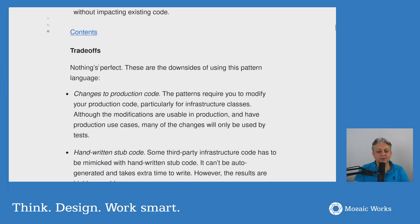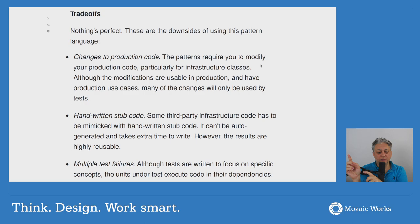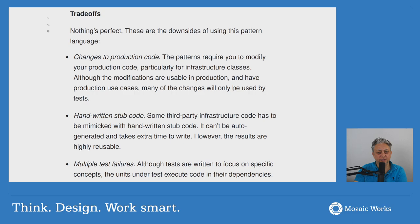Now the trade-offs — nothing's perfect. First, changes to production code: you'll need to add changes, particularly for infrastructure classes. That said, since you test behaviors that combine multiple classes, you don't need to make every class nullable — only the classes that touch external resources, what he calls infrastructure classes, and maybe classes at the edge of modules depending on how your code is organized.